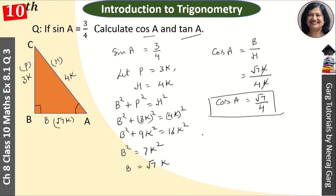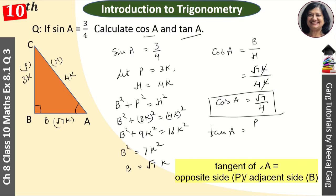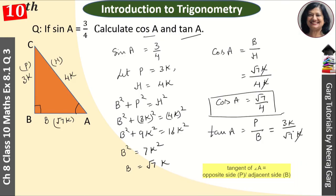Now let's find tan A. Tan A equals perpendicular upon base, or opposite side upon adjacent side. The perpendicular is 3K and base is root 7K. Canceling K, we get tan A equals 3 upon root 7. This is our answer.